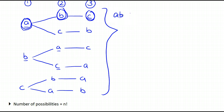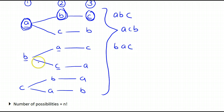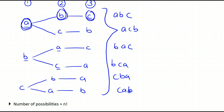So we have: A-B-C, A-C-B, B-A-C, B-C-A, C-B-A, and C-A-B — reading out all six paths from our tree.